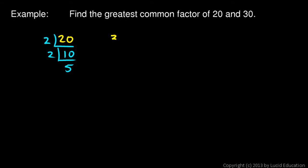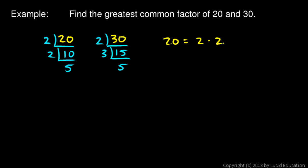Then do the same thing with the other number, 30. 30 is 2 times 15, and 15 is 3 times 5. Then we list all of those. So 20 is equal to 2 times 2 times 5, and 30 is equal to 2 times 3 times 5.